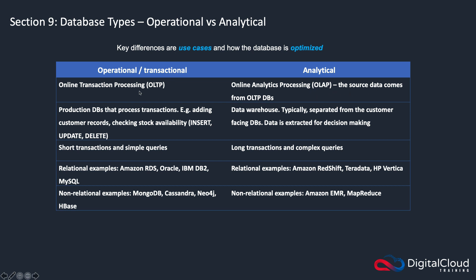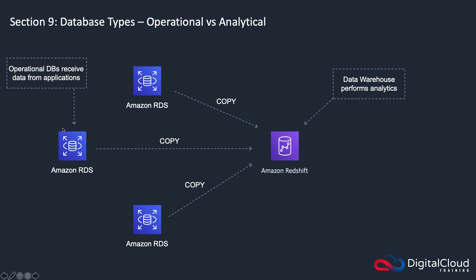The source data for OLAP comes from the operational databases. For example, maybe these are your databases distributed around the country — your operational databases receiving data from the applications. When a customer orders, information goes into the different databases. Then when you want to perform complex queries to find out customers' buying habits, you can copy your data into a data warehouse, which is an analytical type of database, and perform queries on it. The benefits are that you can offload the processing, gather all this data into one place, and not put a load onto your production database to slow it down. Also, these databases are optimized for this type of query.